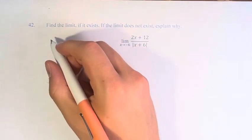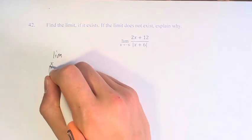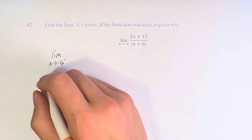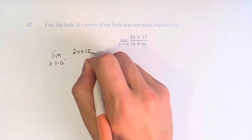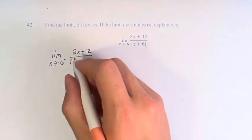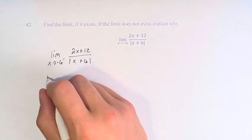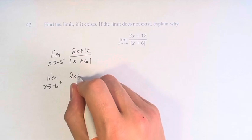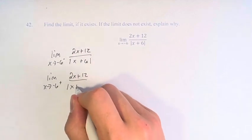So what we're going to do is we're going to take the limit as x approaches negative 6 from the left of 2x plus 12 over the absolute value of x plus 6, and the limit as x approaches negative 6 from the right of 2x plus 12 over the absolute value of x plus 6.